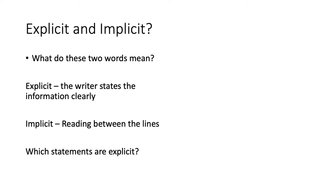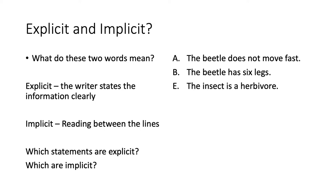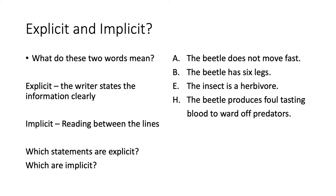Which statements, then, out of the four that you identified, are explicit? Which are implicit? For example, 'the beetle does not move fast' — are you told that directly, or do you have to work that out? You are told B and H explicitly, but you are not told A explicitly — you have to work that out. The beetle doesn't scuttle; it stays on the path for quite some time. Have a look to see if the word 'herbivore' is used in the text — that will tell you whether it is explicit or implicit.